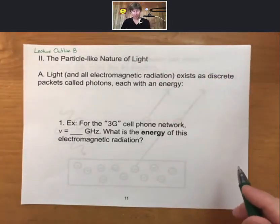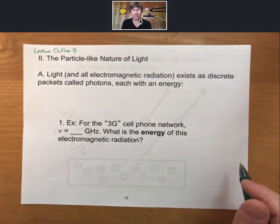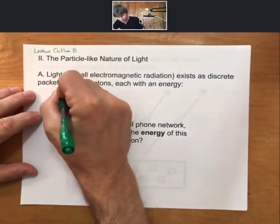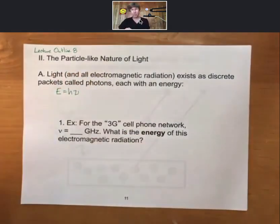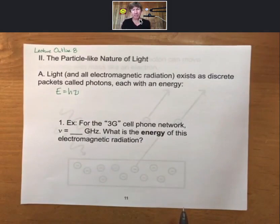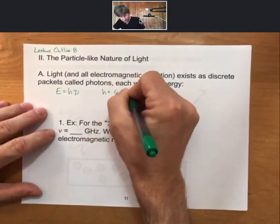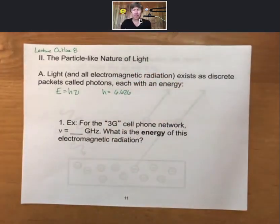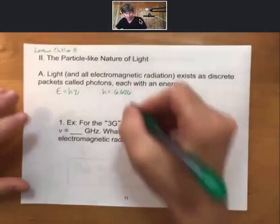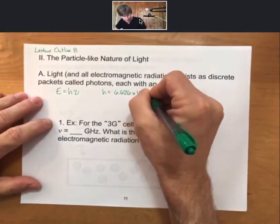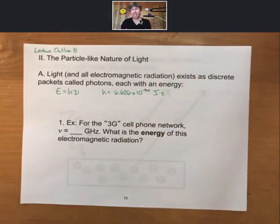Now, light and all electromagnetic radiation exists as discrete packets called photons, each with an energy. The equation is E energy equals h, which is Planck's constant, times frequency.